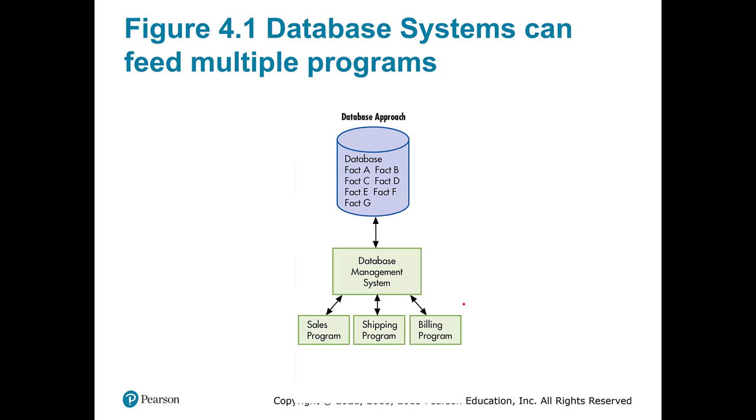One of the big things we use databases for is to coordinate between different pieces of software. Often you'll have a single database for your ERP system in an organization, and different programs all tie into this one database — sales, shipping, billing — all tying into one location. This is important because you want a single source of truth for any fact in your system. A fact could be a person's name or address. For WVU, when you enroll we want to record your name in one single place and access it in multiple systems — for book check-ins, your transcript, the registrar, alumni, anything.